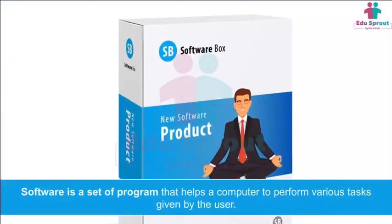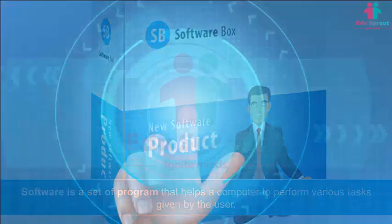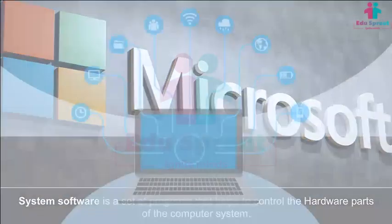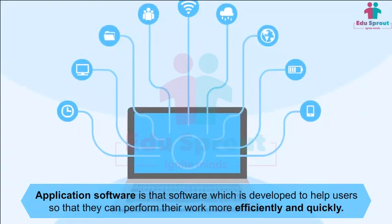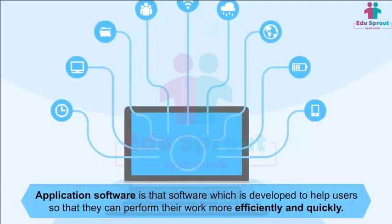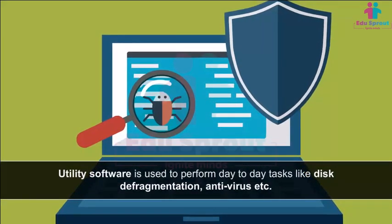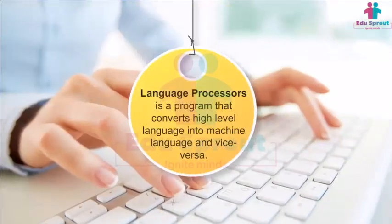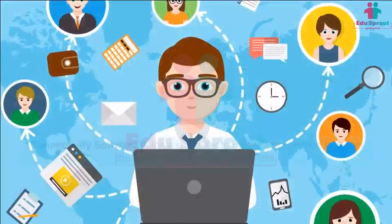Software is a set of programs that helps a computer perform various tasks given by the user. Software can be further classified as: system software, which helps control the hardware parts of the computer; application software, developed to help users perform their work more efficiently and quickly, like MS Office; utility software, used to perform day-to-day tasks like disk fragmentation and antivirus; and language processors, which convert high-level language into machine language and vice versa.